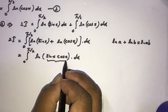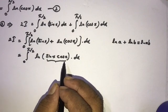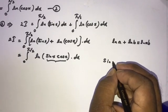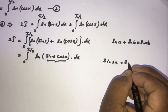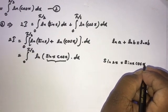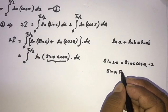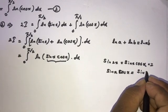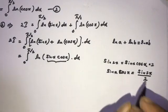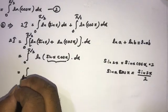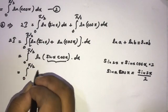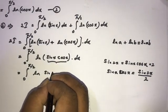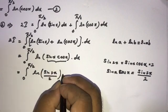Now we can use a property of logarithms: natural log of a plus natural log of b equals natural log of a times b. So we can write the integral from 0 to π/2 of natural log of sin(x)·cos(x) dx. Now, multiplying by 2, this matches the double angle formula: sin(2x) = 2·sin(x)·cos(x), so sin(x)·cos(x) = sin(2x)/2. So we write the integral from 0 to π/2 of natural log of sin(2x)/2 dx.